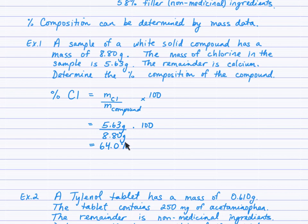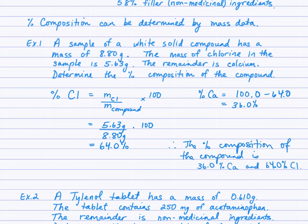If the compound's only made of chlorine and the remainder is calcium, just two elements, then if one element is 64% of the mass, I can very quickly figure out the percent of calcium. 100.0 minus 64.0, we'll come up with 36.0%. Therefore the percent composition of this compound is 36.0% calcium and 64.0% chlorine.